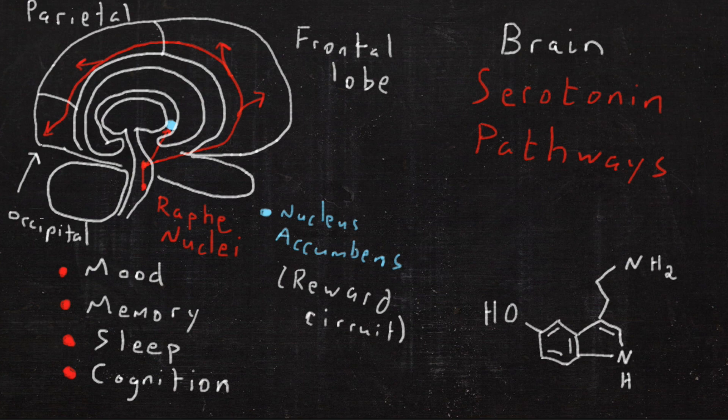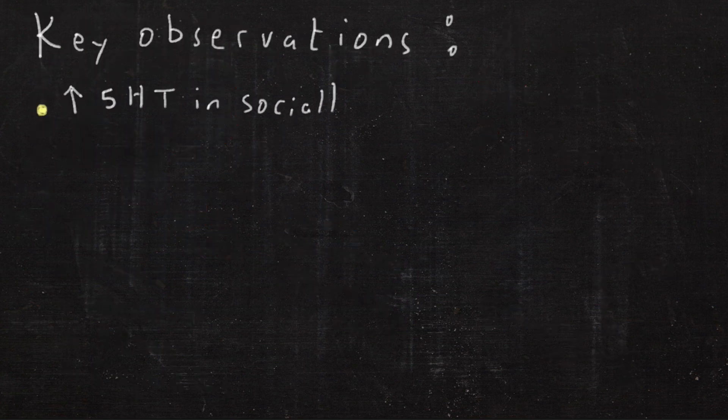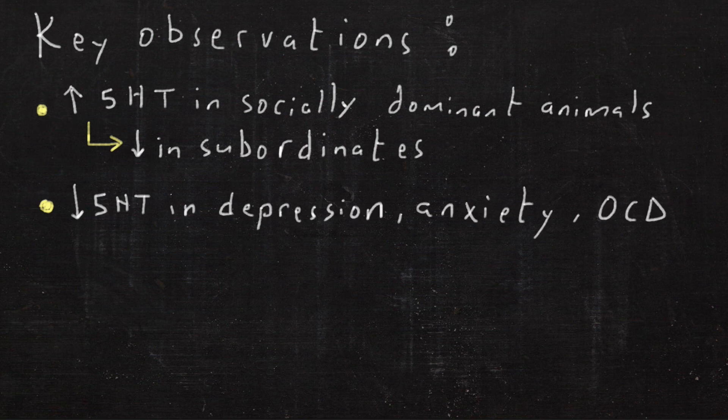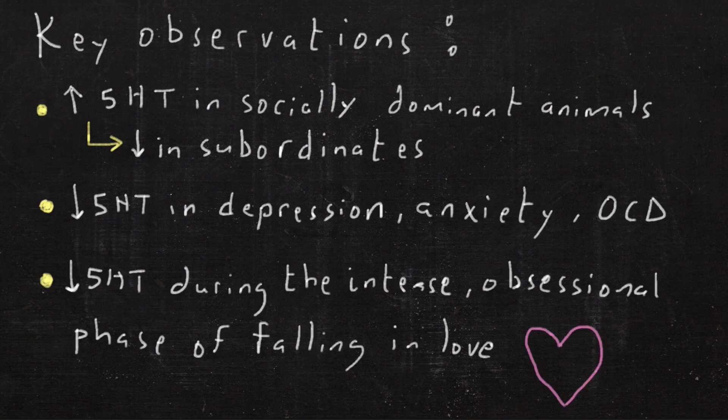It's involved in mood, memory, sleep, and cognition. Key observations: It's increased in socially dominant animals and decreased in subordinates. It's also decreased in depression, anxiety, and OCD, and during the obsessive phase of falling in love.